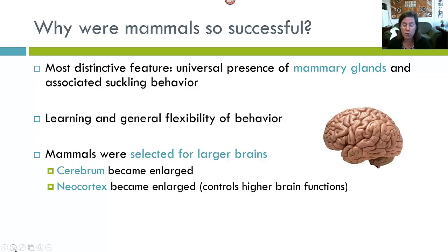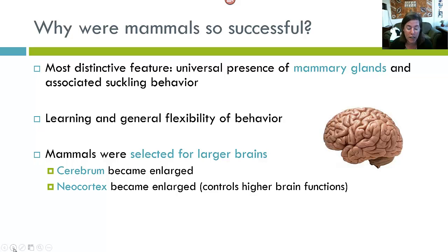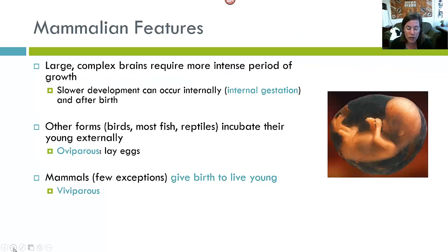In particular, the cerebrum became generally enlarged, especially the neocortex. The neocortex controls higher brain function — it's the thinking part of the brain that allows you to recognize there's more than one way to do something. In some mammals, the cerebrum expanded so much that it came to comprise the majority of brain volume. For such a large and complex organ as the brain to develop, a much longer and intense period of growth was required, with slower development occurring internally through gestation as well as after birth through postnatal growth.